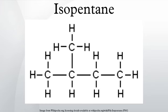Isopentane, C5H12, also called methylbutane or 2-methylbutane, is a branched-chain alkane with 5 carbon atoms.